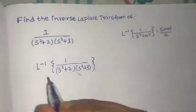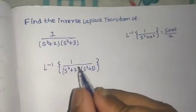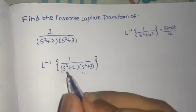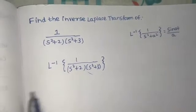Just one thing. Here in the denominator, we don't have just one s²+a² term. We have two things.